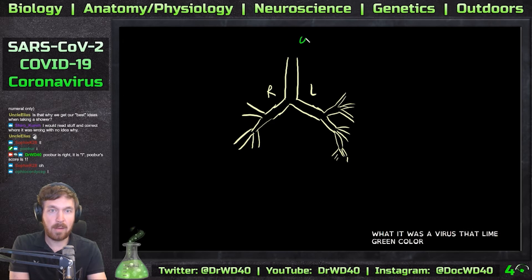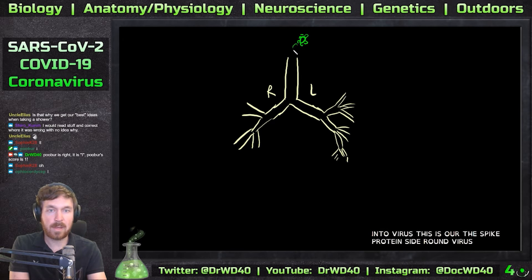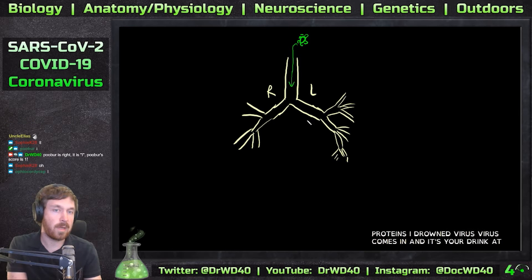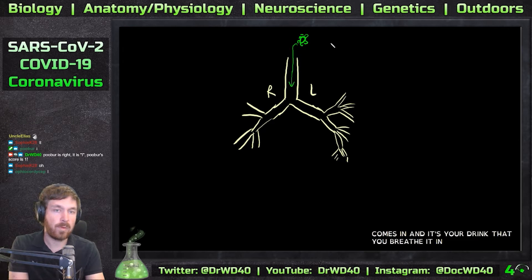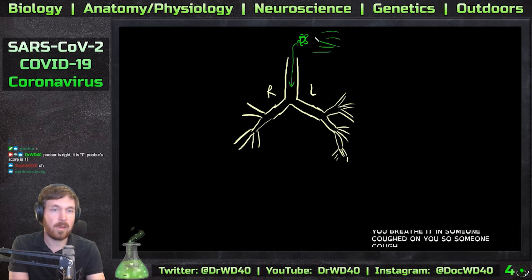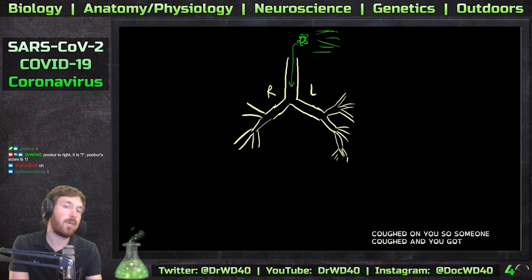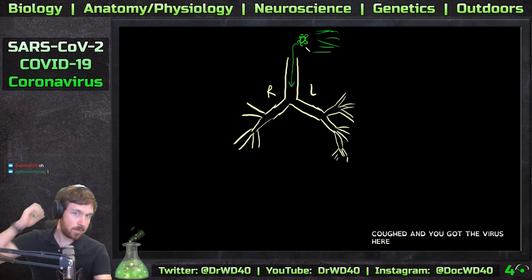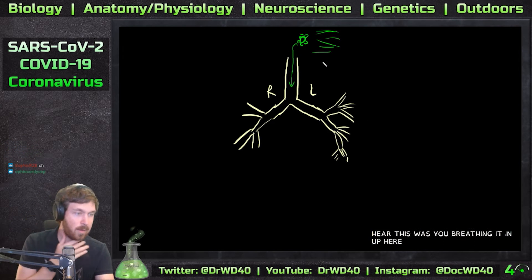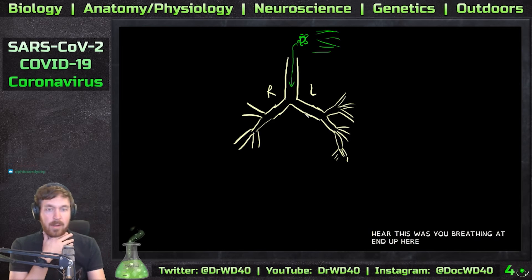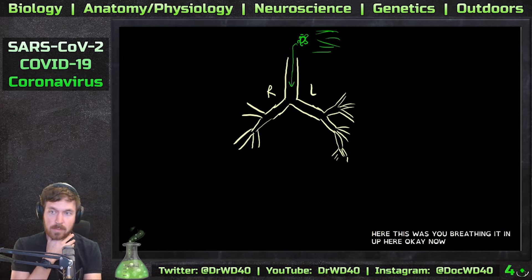So if you breathe in the virus - these are the spike proteins I draw on the virus. The virus comes in and into your trachea, you breathe it in. Someone coughed on you, so someone coughed and you got the virus here. This was you breathing it in up here.